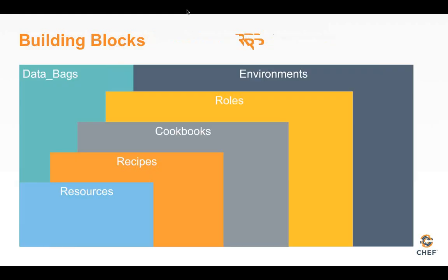The last concept is data bags. A data bag is really a variable or set of data that can be accessed through Chef via either search or recipes. A data bag can be something like a software version or a key. Data bags can be both encrypted and unencrypted — encrypted data bags require a separate key. A great example of a data bag would be a user object. You might have a user called Bob, and inside that data bag you'd have their shell, UID, and home directory — all accessible globally using key-value search terms.